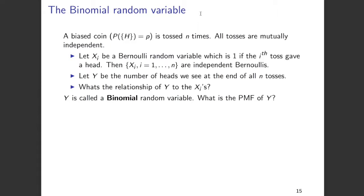We'll model this using a binomial random variable. To do that, let us go back to a Bernoulli random variable, and let xi be a Bernoulli random variable which is 1 if the i-th toss gives a head. Therefore, the different xi's, i running from 1 to n, are independent Bernoulli random variables. Each xi can take a value of 1 or 0 depending on if the i-th toss is a head or a tail. Let y be another random variable which denotes the number of heads that we see at the end of these n coin tosses.